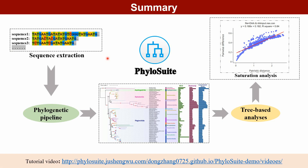Initially, we downloaded the required data in GenBank format from the NCBI database, imported it into PhyloSuite, and reconstructed the phylogenetic tree. The resulting tree can be annotated in iTOL using the files generated by PhyloSuite and used for various tree-based statistical analyses, such as substitution saturation analysis. For the tutorial video, please follow the link below.